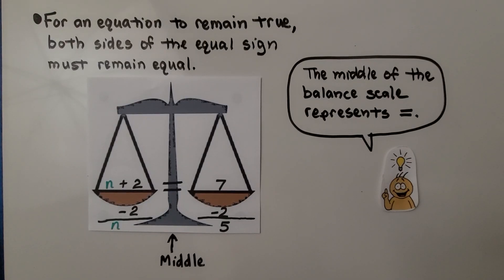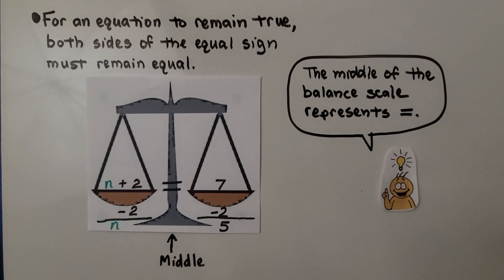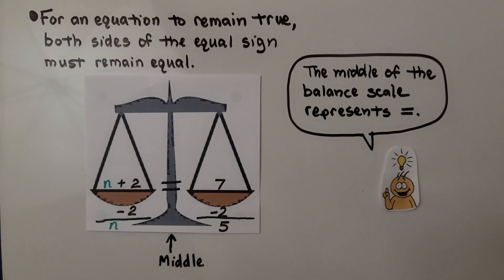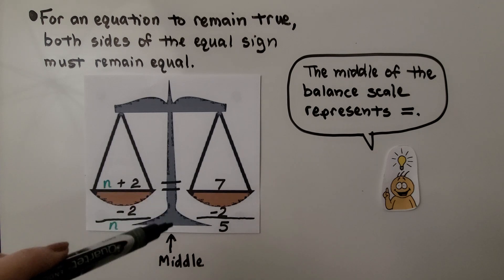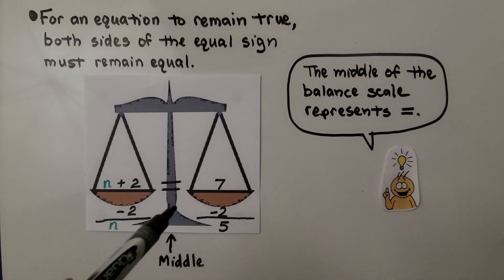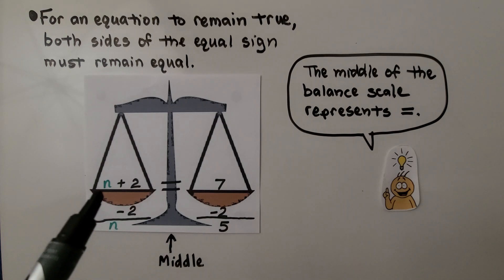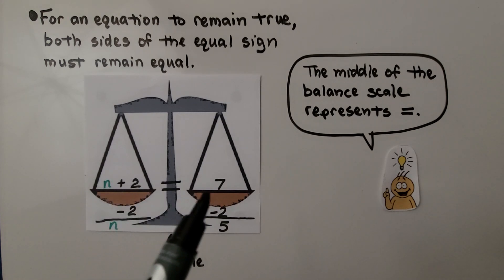For an equation to remain true, both sides of the equal sign must remain equal. The middle of the balanced scale represents the equal symbol. We have n plus 2 is equal to 7. If we take this 2 away, we need to take 2 away from this side. We have n is equal to 5.